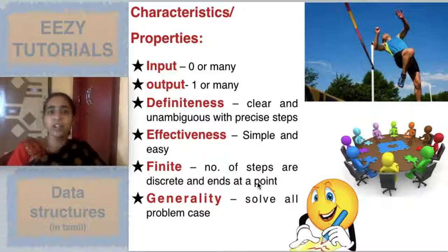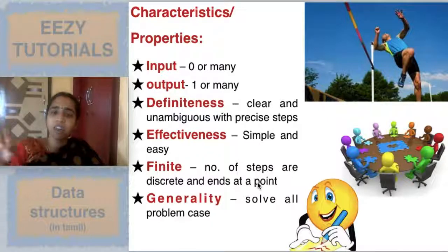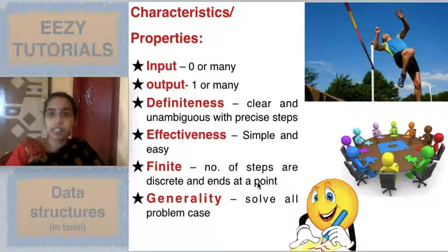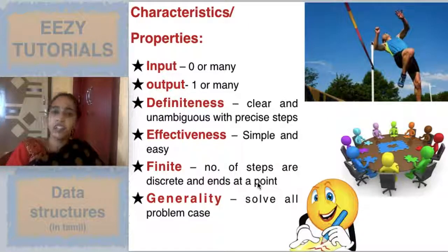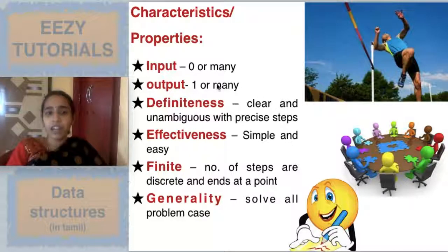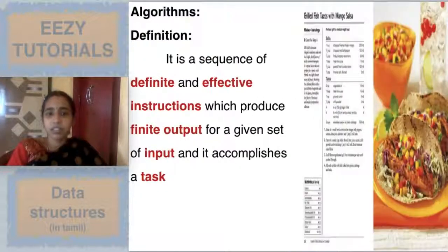Finiteness means the number of steps should be discrete — it should end at one point. For example, if a cooking show says 'keep on stirring, keep adding milk and coffee powder,' how long do you have to do that? But if they say 'stir it for two minutes' or 'stir it 10 times,' that is a well-defined instruction. The same applies to writing algorithms.